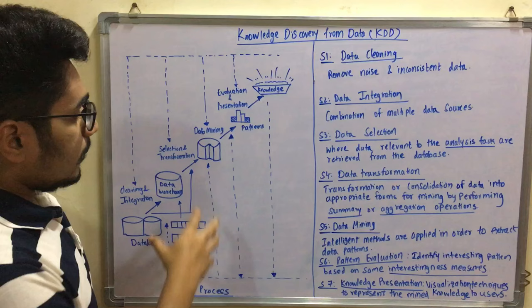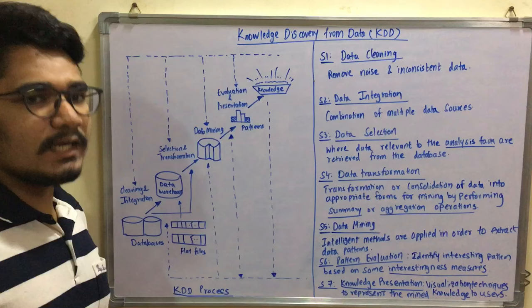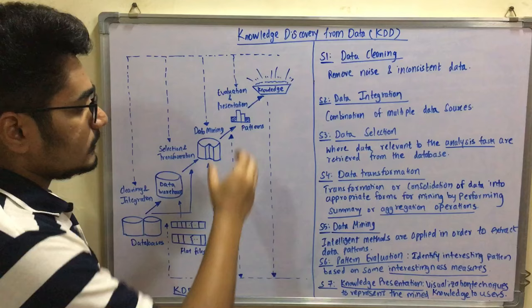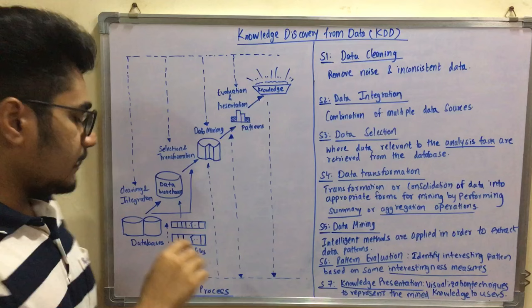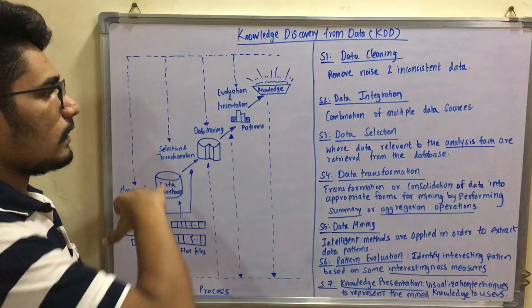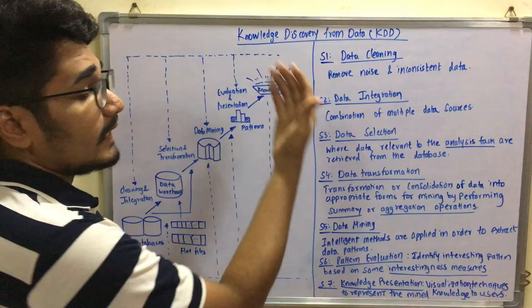With that selected data you will extract some kind of pattern or interestingness measure. That is where data mining comes into picture — after selection and transformation, you go higher up the ladder. Then you have evaluation and presentation techniques where you represent different patterns of the extracted data, and finally you have knowledge. That knowledge comes from all the activities: analysis, integration, selection, transformation, and cleaning.